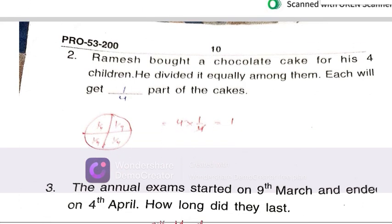Ramesh bought a chocolate cake for his 4 children. He divided it equally among them. Each will get 1 by 4 because this is a whole cake. 4 kids will get together, so 4 into 1 by 4 is equal to 1.